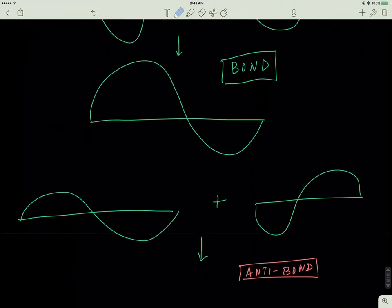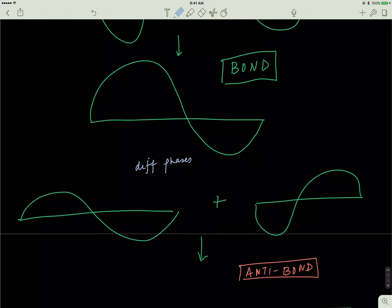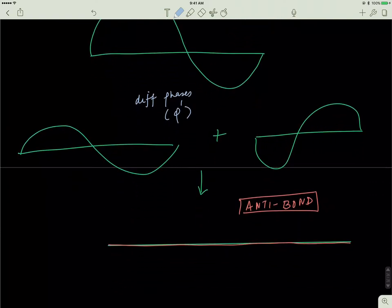However, if these electrons are in different phases, then what happens is you get a destructive effect and you get something called an anti-bond. So these anti-bonds are extremely unstable and they don't really give rise to stable elements. So this is the quantum chemical connection.